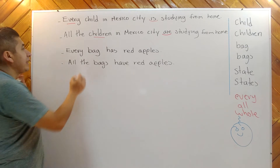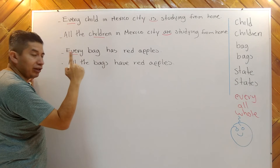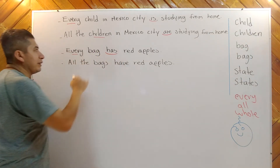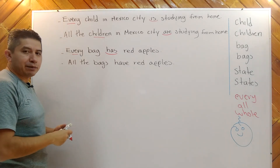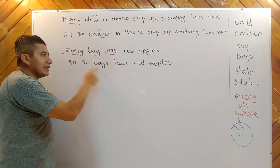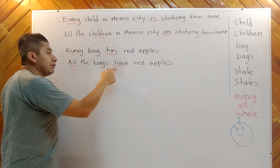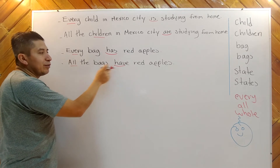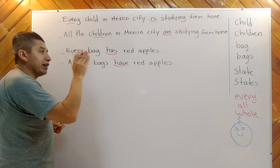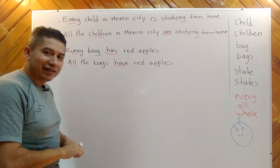Entonces, observamos que tenemos every bag, porque es singular — una sola. Every bag, cada bolsa, y el verbo has en tercera persona. Hacemos every, el verbo has — tercera persona: he, she, it. Sin embargo, ahora tenemos all the bags — todas las bolsas — have. Porque es plural, y en el plural se utiliza have y no has. All the bags have red apples.